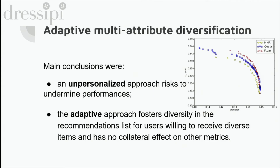The main conclusions of our approach were that an un-personalized approach using the same strategy for each user does improve diversity, but only at the cost of accuracy — in line with the well-known accuracy-diversity trade-off. On the contrary, our adaptive approach was able to foster diversity only for the subset of users who were actually interested in a diversified list: users in the fourth quadrant, who have a long profile history and high entropy, meaning they want to explore more. This led not just to improvements in diversity, but also positive collateral effects on other evaluation metrics.